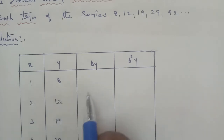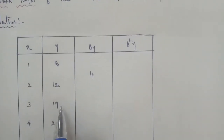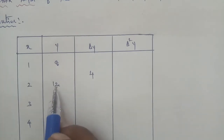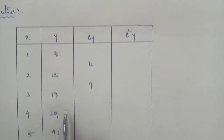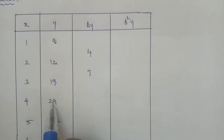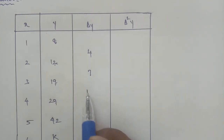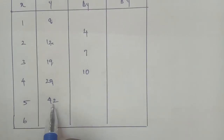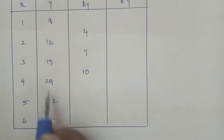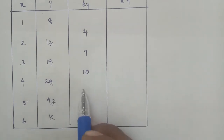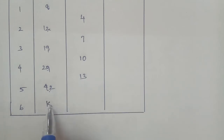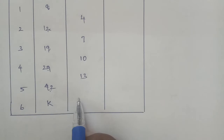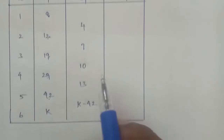Computing the first differences (delta Y): 12 minus 8 equals 4. 19 minus 12 equals 7. 29 minus 19 equals 10. 42 minus 29 equals 13. And the last first difference entry is K minus 42.